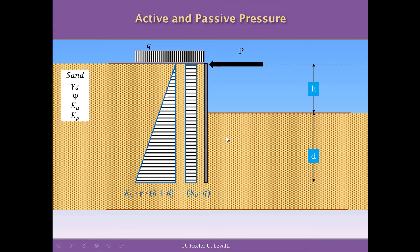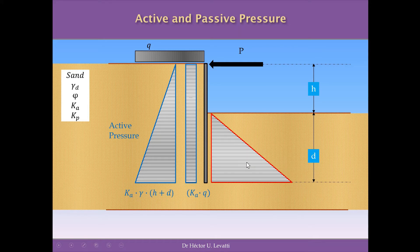The active pressure due to the self-weight of the ground is basically a triangle, because there is a linear distribution of the pressure of the ground when we go deeper. The base of this triangle that represents the pressure is the coefficient of active pressure times gamma times the total height of this wall. This is the active pressure, and we have the passive pressure to the right side, which is a triangle as well.